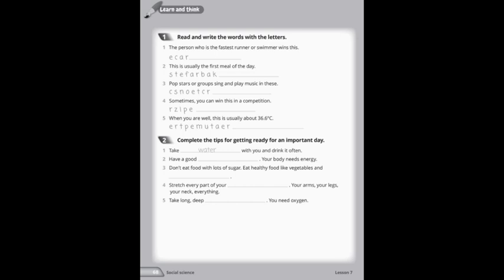And now let's do the exercises from your activity books. Activity book, page 68, Exercise 1. Read and write the words with the letters. 1. The person who is the fastest runner or swimmer wins this. We learned that this will be a race. So from these letters you need to write 'race' on the line.